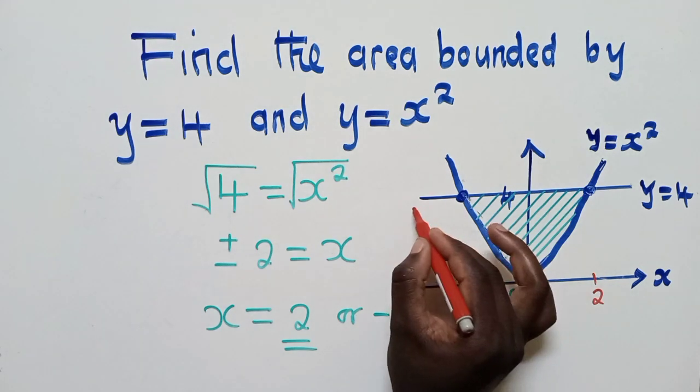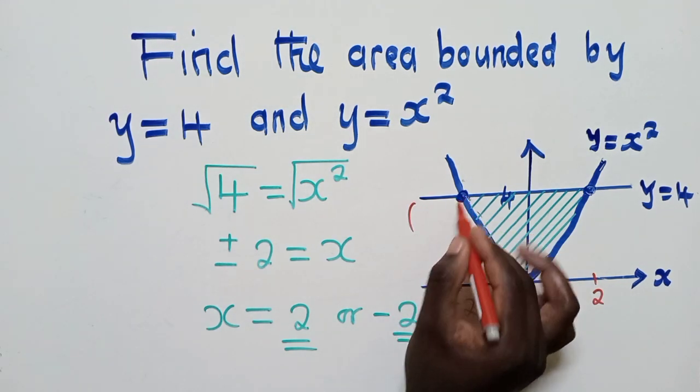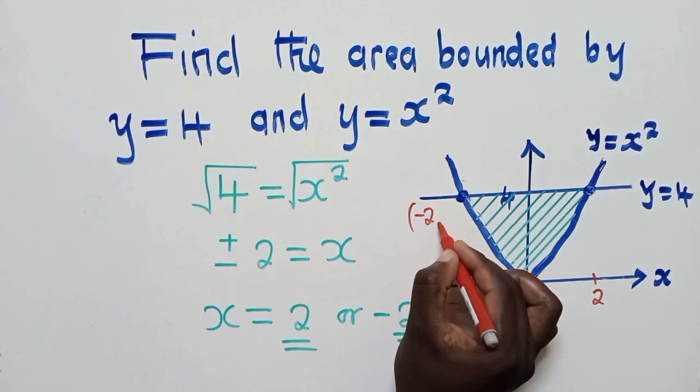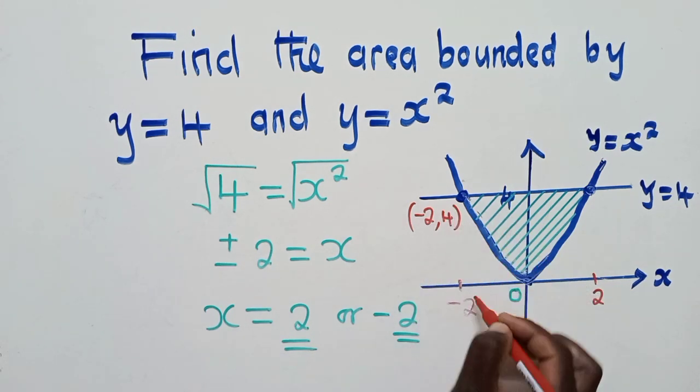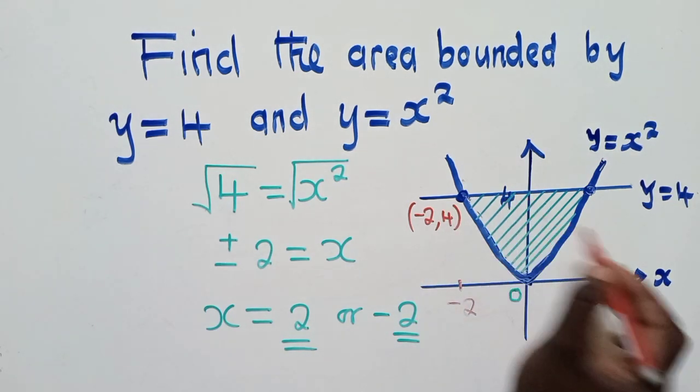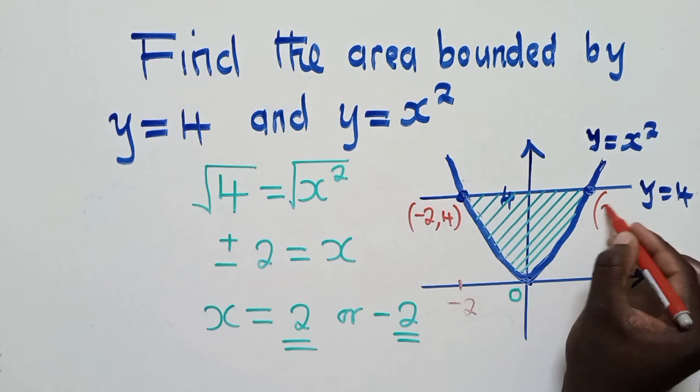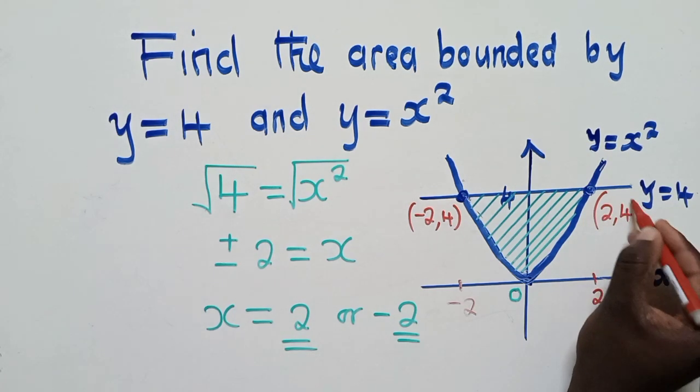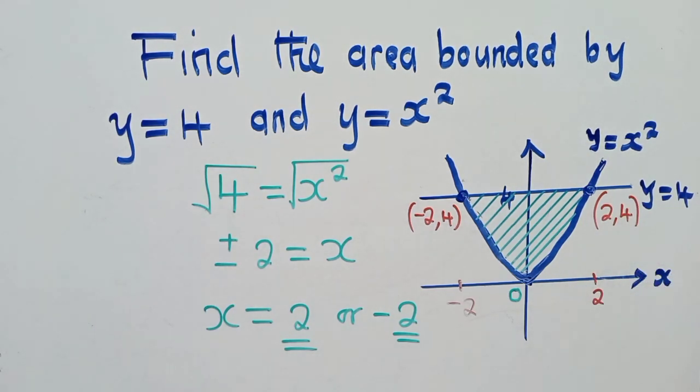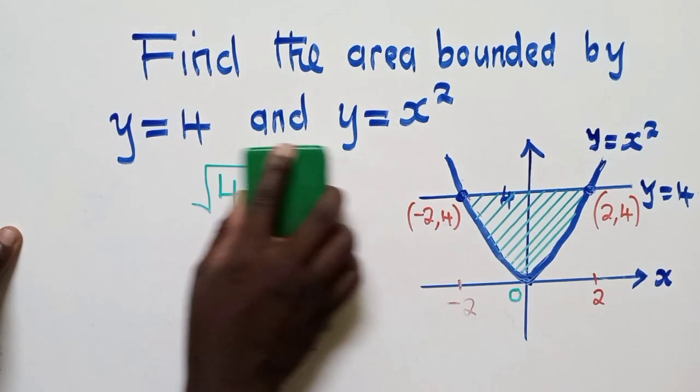So I'll say my point of intersecting here is a negative 2, 4. This negative 2, 4, which is here. For this side, it's a 2, 4. It's very important. So you need to find the points of intersecting. So after finding the points of intersecting, you now introduce the double integral.